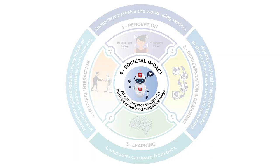Number five, societal impact. AI affects our world in positive and negative ways. AI makes it so that no one in the world starves. But we also have to make sure to guard against implicit bias and make sure that the computer algorithms that we write are fair for everyone.